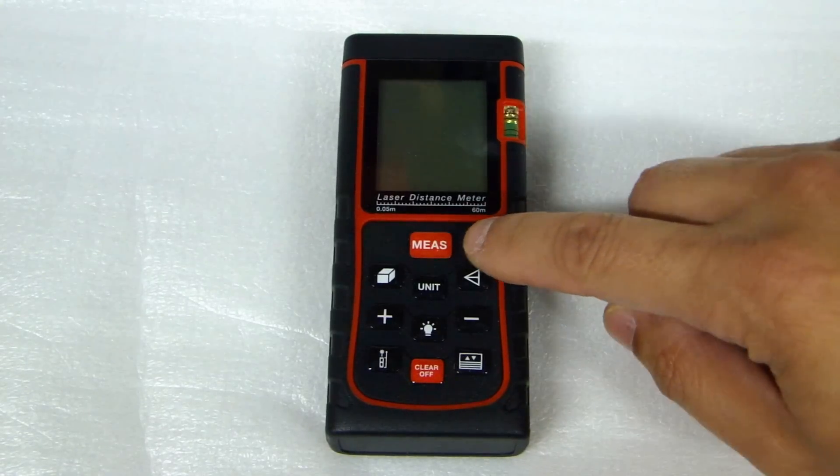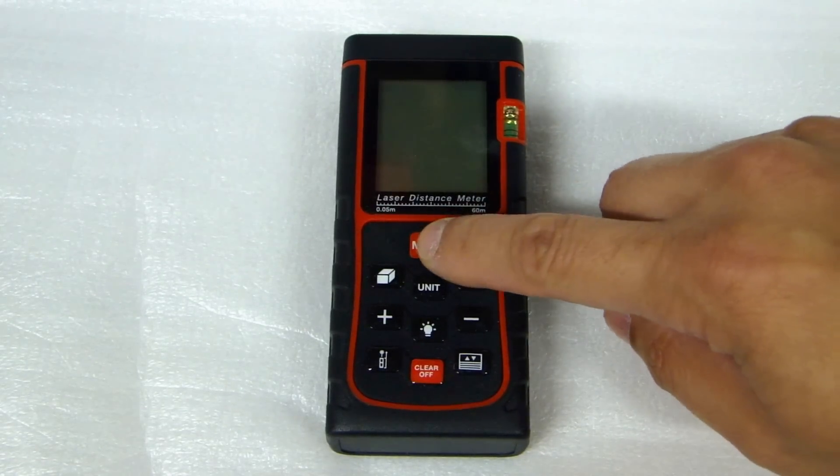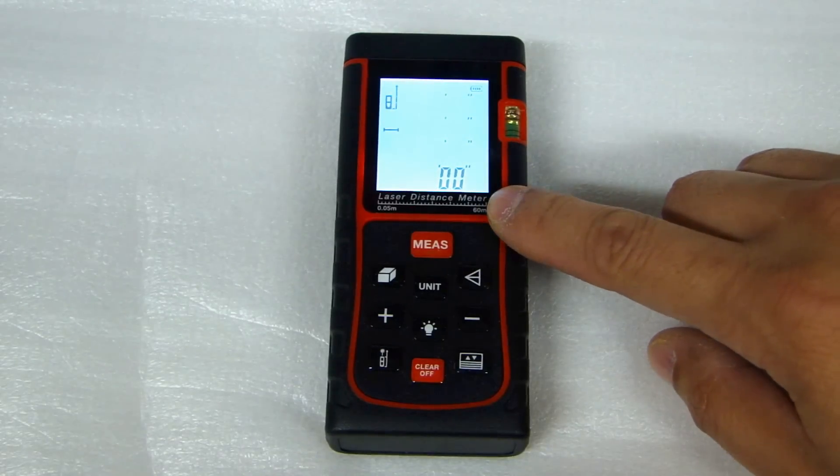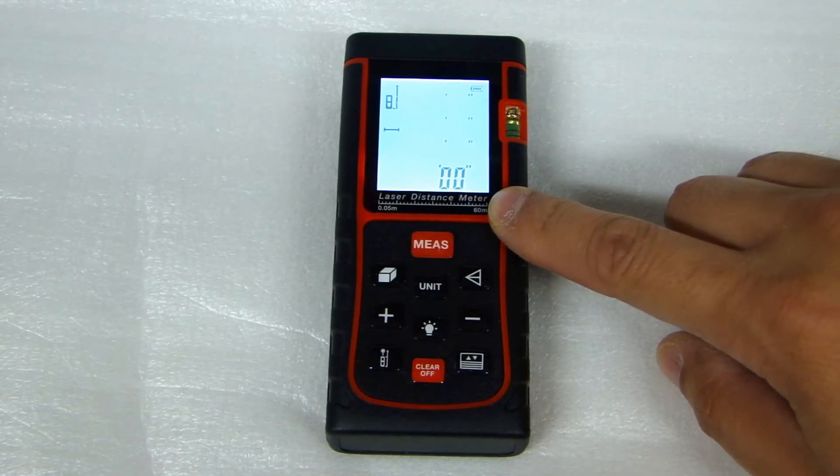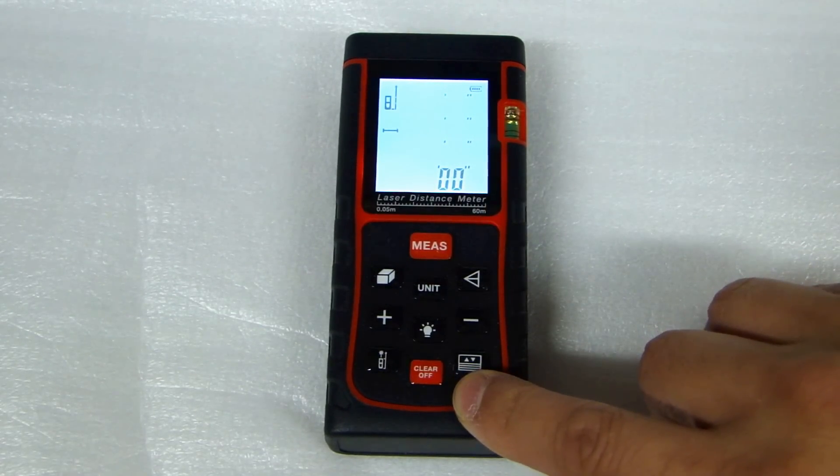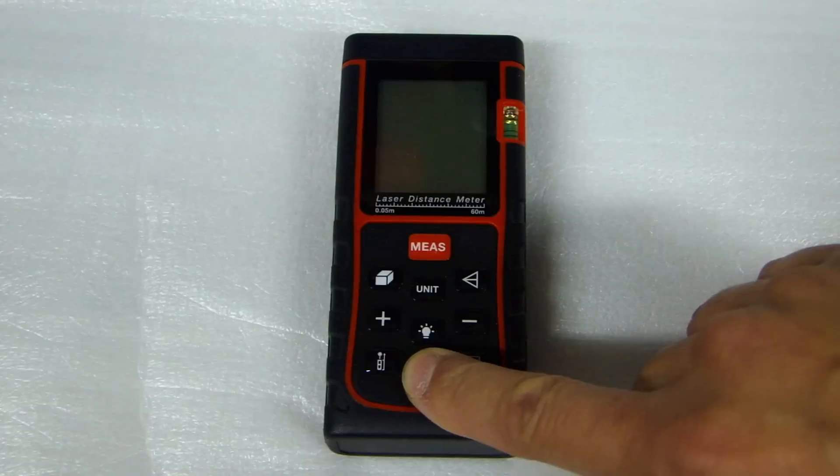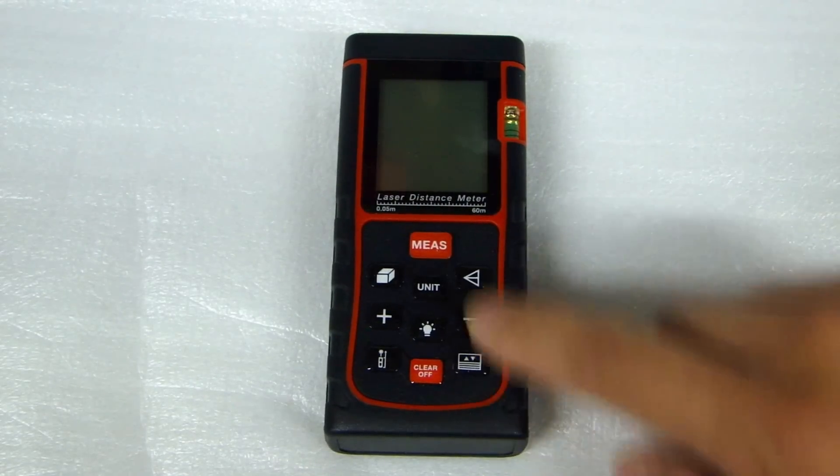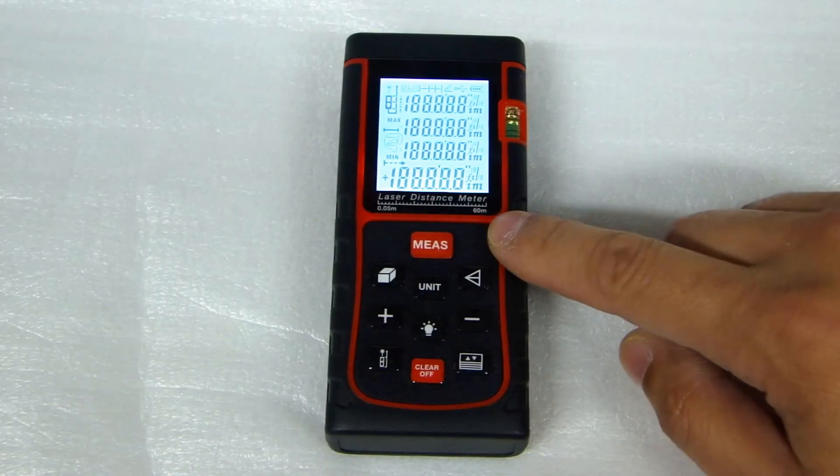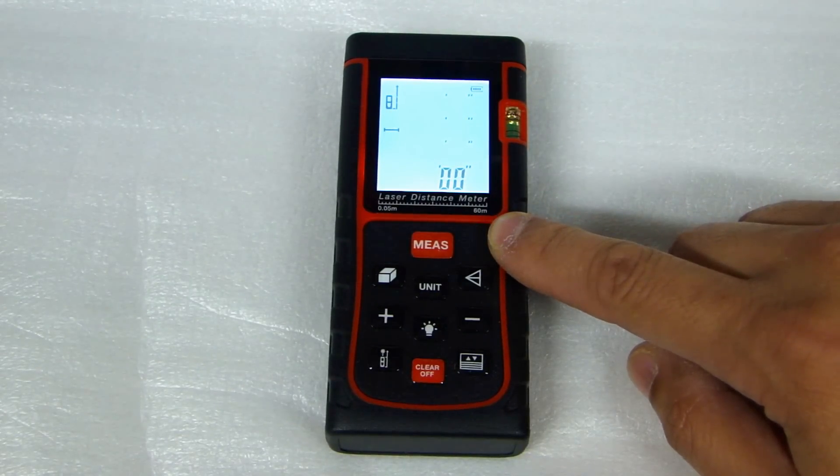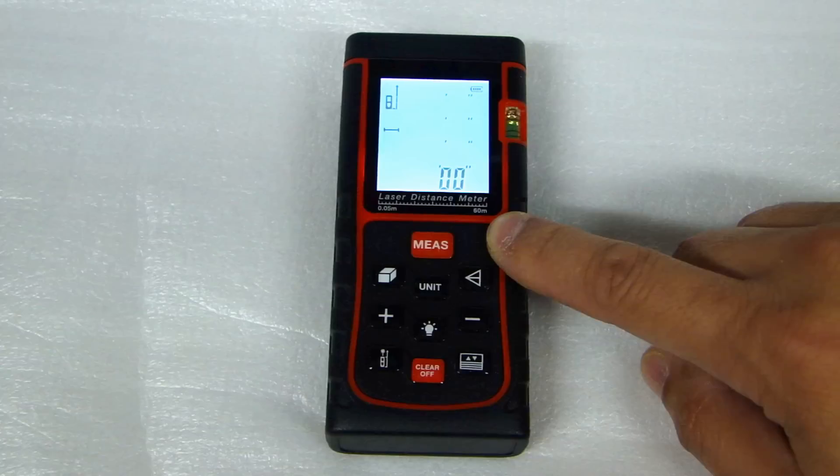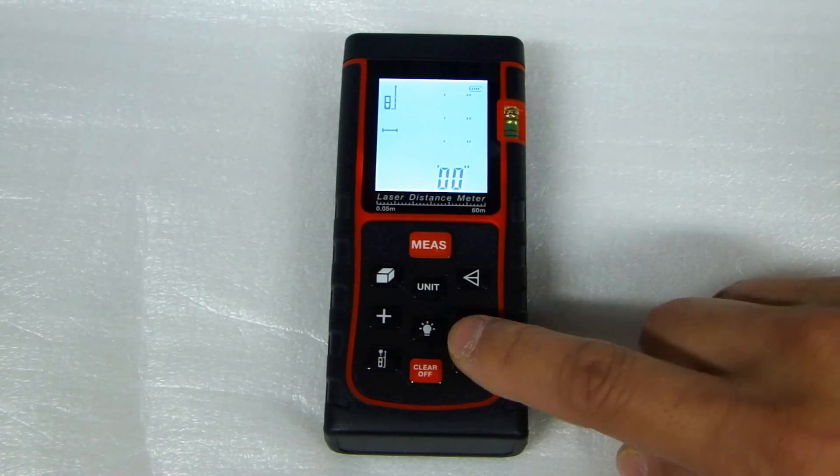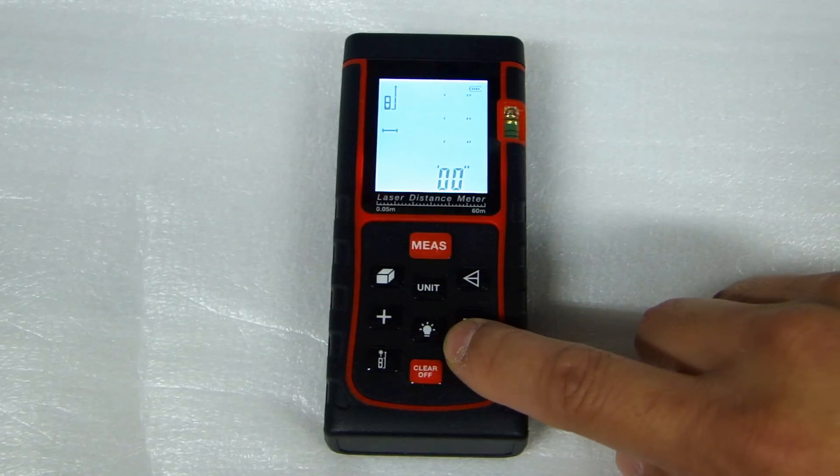To turn the device on press the measure button right here. You'll see the backlight turn on. To turn off the device press the clear off button at the bottom here. Now after a period of time the backlight will turn off. When that does happen all you have to do is press this light bulb button right here to turn the backlight back on.